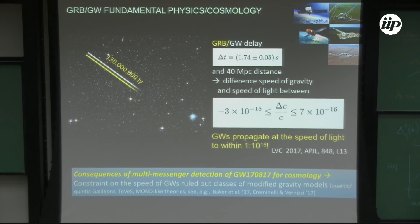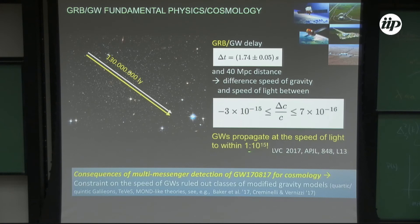From the 1.74-second delay between the gravitational wave and the gamma-ray burst, we can estimate the speed of gravitational waves. Gravitational waves propagate at the speed of light within 1 part in 10^15 — a pretty precise measurement of how close the speed of gravitational waves is to the speed of light.